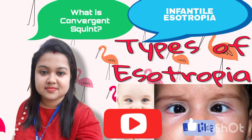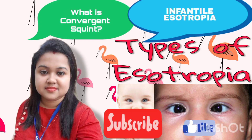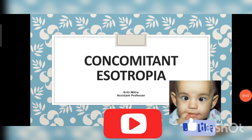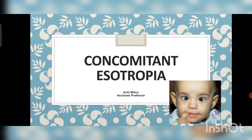Today I'll be discussing about concomitant esotropia, that means a non-paralytic esotropia. Non-paralytic esotropia means the amount of deviation is the same in all gaze positions. If the amount of deviation is not the same in all gaze positions, that is called a paralytic esotropia. Basically I'll be discussing about infantile esotropia, which is very commonly seen in babies.